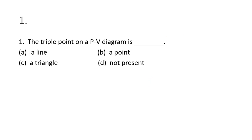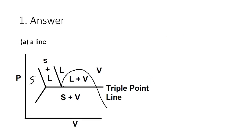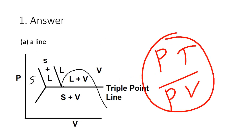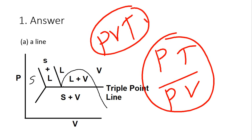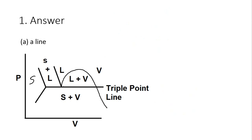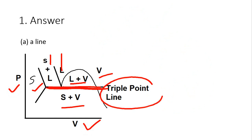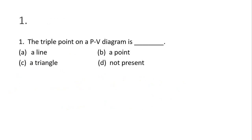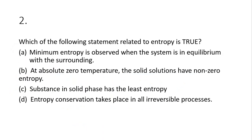The answer is a line. We have two diagrams — the PT diagram and the PV diagram. On the PV diagram, we have solid, solid+liquid, liquid, liquid+vapor, vapor, and solid+vapor regions. All phases coexist along a line, which is why it is called the triple point line. So option A — a line — is the correct answer.